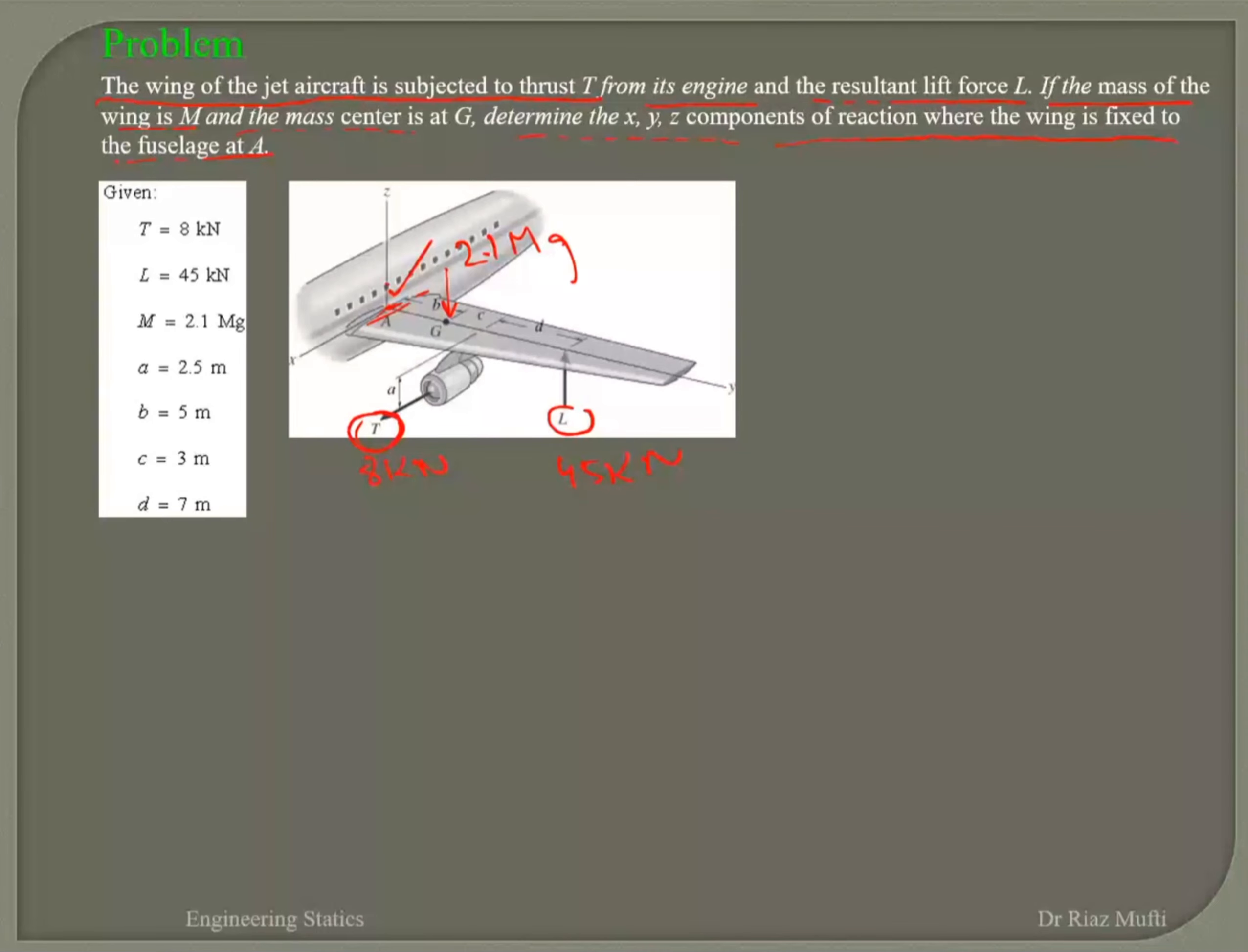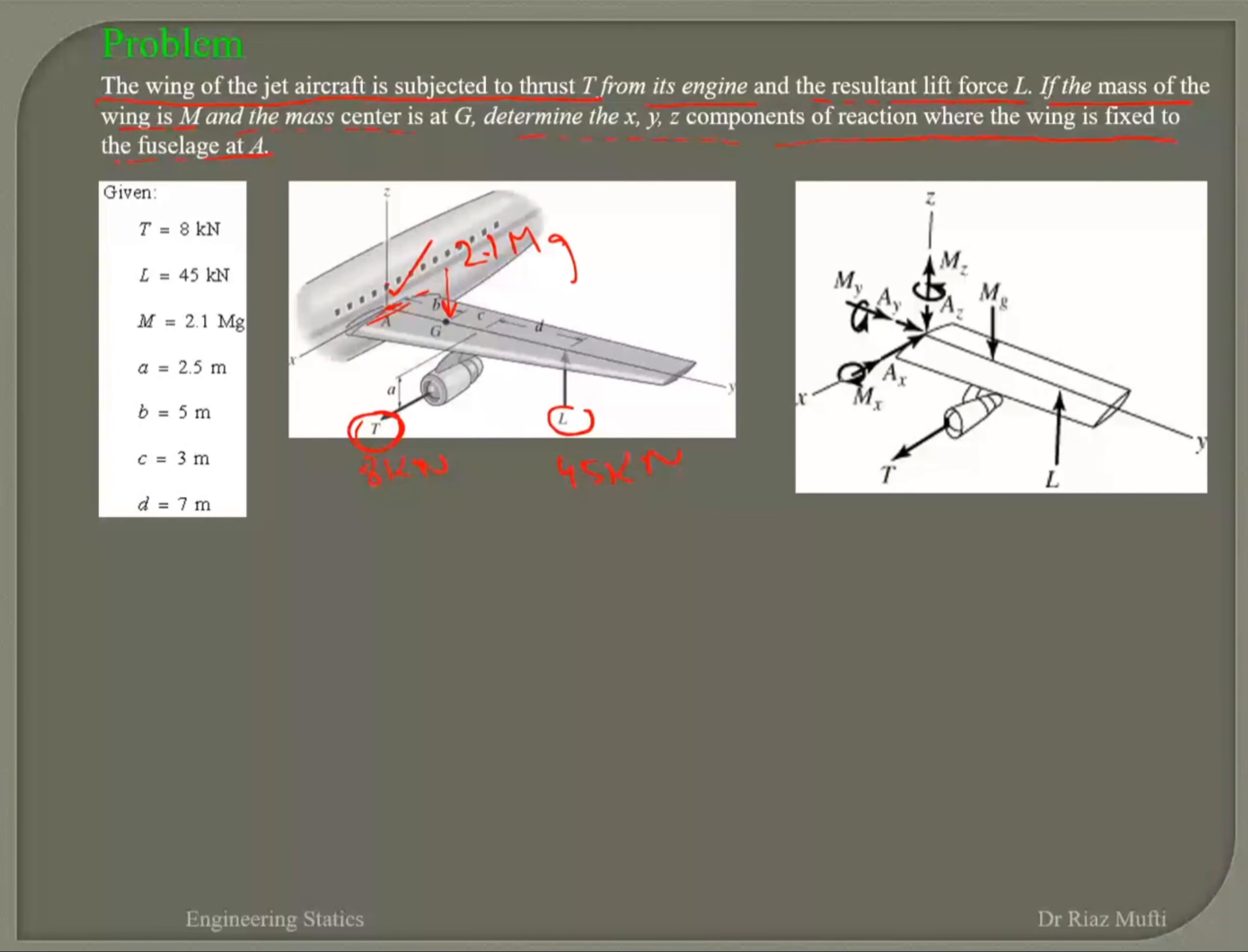Okay, so that's how your free body diagram looks for the wing. You've got the active forces: thrust, lift, and the weight.